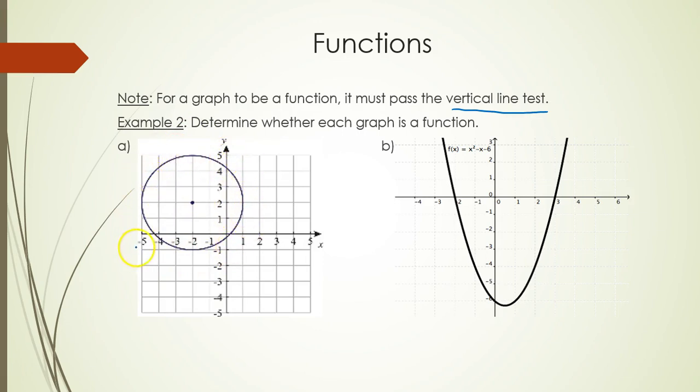For instance, in part a with the circle, I touch multiple points vertically at the same time in many places. For instance, I have (-2, -1) and then I also have (-2, 5). X is not unique; that's why the vertical line test works.